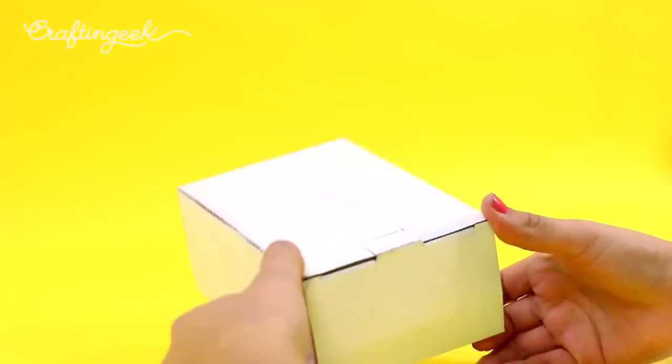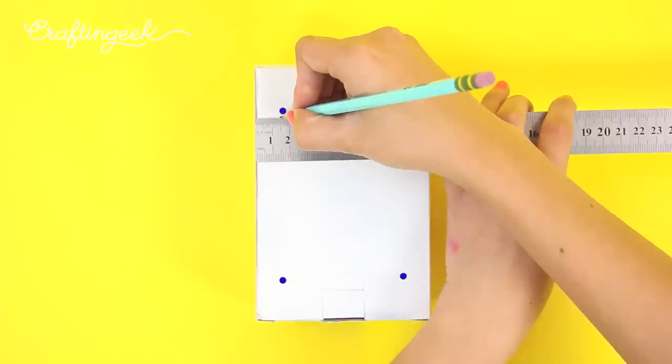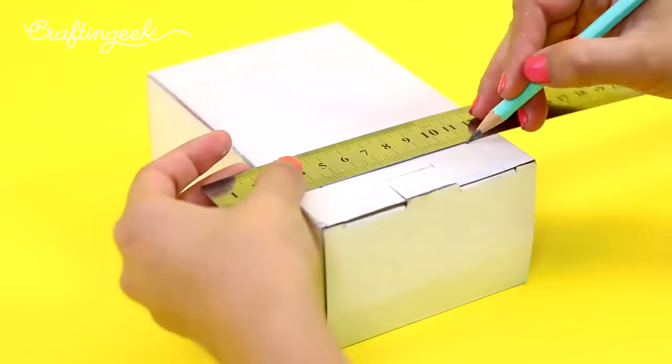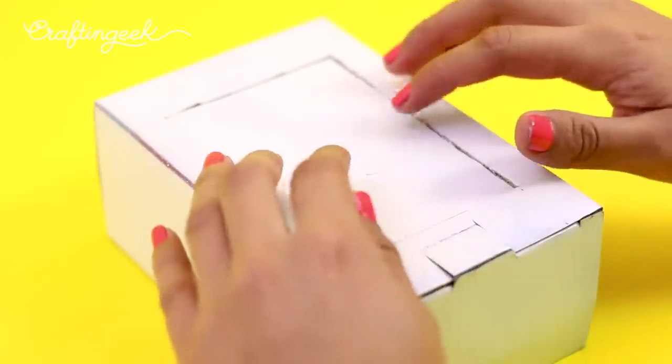We're going to need a box that has a lid on the top and on the bottom. Here we're going to draw a seven by ten centimeter door right in the middle. If you're using a box with different measurements then this may vary. Then we're going to cut it with a precision knife very carefully and only on three of the sides.